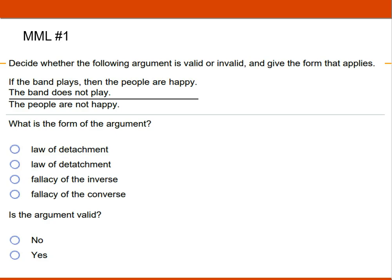Alright, decide whether the following argument is valid or invalid and give the form that applies. Now since they're asking me to give the form, I do not have to do a truth table because it's going to be one of the forms that are on your handout.